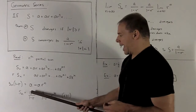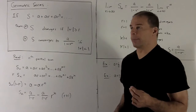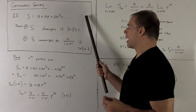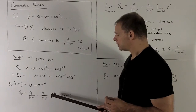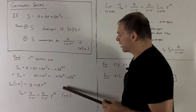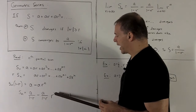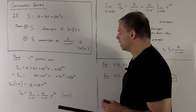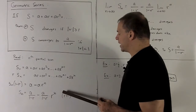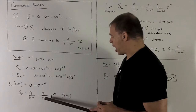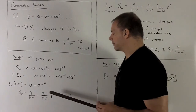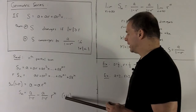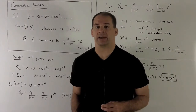Note a and r are going to be fixed numbers — they're fixed at the very beginning of the problem. The only thing that can vary here is n, so n is like our variable. This formula is only going to make sense for r not equal to one, or I wind up dividing by zero, but it'll be easy enough to split that case out in a second.